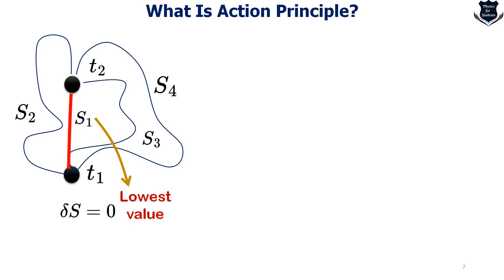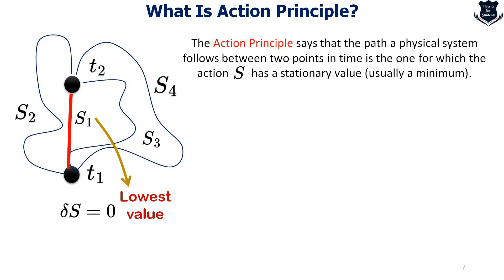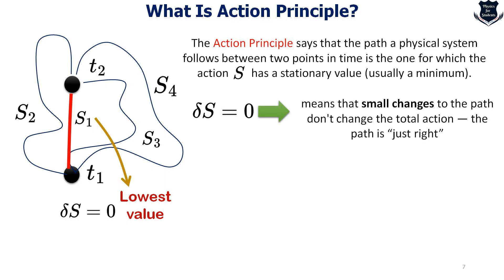This path is what is called the lowest value. That means it takes the minimal value and mathematically we denote it as delta S equals zero. The action principle actually tells that the path of a physical system between two points in time is the one in which the action S has stationary or usually a minimal value. Delta S equals zero means that small changes to the path don't change the total action.